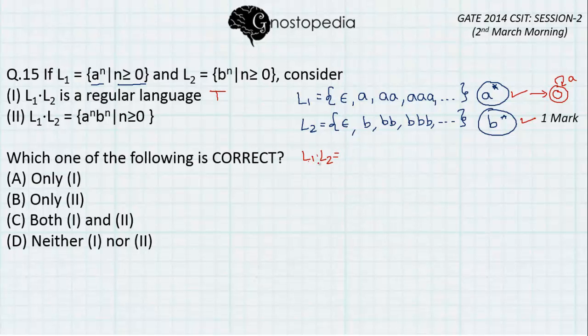Let us find out the set L1 concatenated with L2. So first, epsilon will be concatenated with every other element in L2. We get epsilon, b, b, b, b, b and so on. That is nothing but the closure of b.